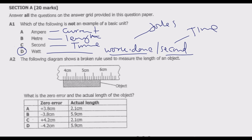The following diagram shows a broken ruler used to measure the length of an object. We are required to find the zero error and the actual length. Zero error refers to a type of error where an instrument gives a reading when the true reading should be zero — meaning it is not starting from zero. In this case the ruler starts at 4, and there are ten divisions between 4 and 5, so each division is 0.1.